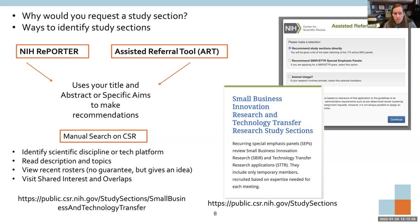There are a couple of ways to choose your study section. NIH has a tool called RePORTER — a repository of all their data — where you can search funded abstracts and get recommendations for study sections. There's also the ASSIST Referral Tool called ART from the Center for Scientific Review. When I tested ART by dropping in abstracts from several proposals, only about two out of five matched the study sections they were actually assigned to, so I'm not sure how accurate it is.